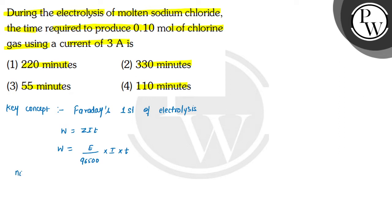So we can write that number of moles of chlorine gas multiplied by molecular weight of chlorine gas. Molecular weight of chlorine gas will be equal to equivalent weight of chlorine gas which is represented as E. So we can write equivalent weight of chlorine multiplied by I.